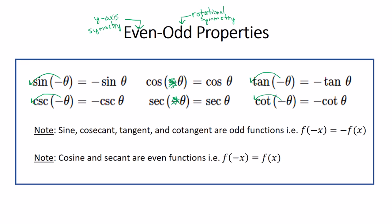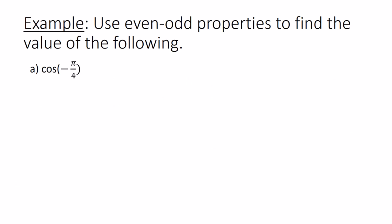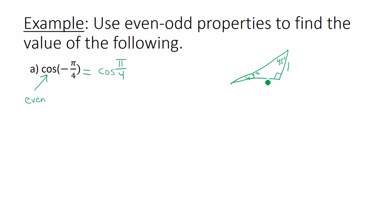Let's use even/odd properties to find values. Cosine is an even function — cosine and secant are the only two even functions — so cosine(−π/4) is the same as cosine(π/4). Making a 45-45-90 triangle with sides 1, 1, √2: cosine is adjacent over hypotenuse, giving 1/√2. Rationalizing by multiplying by √2 over itself gives square root of 2 over 2.